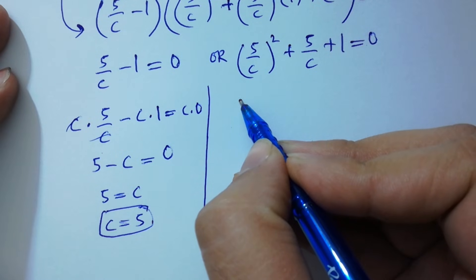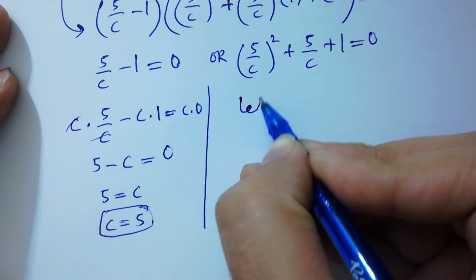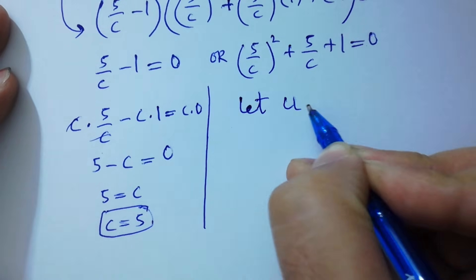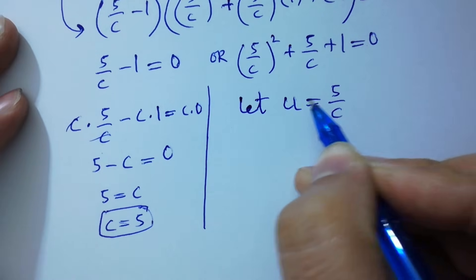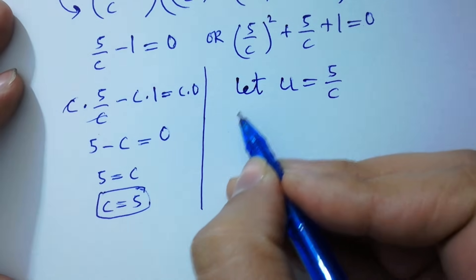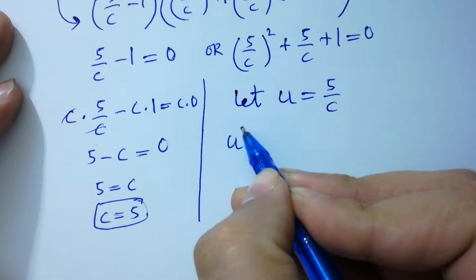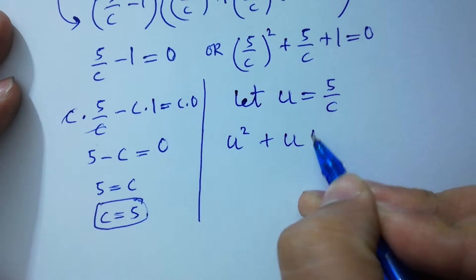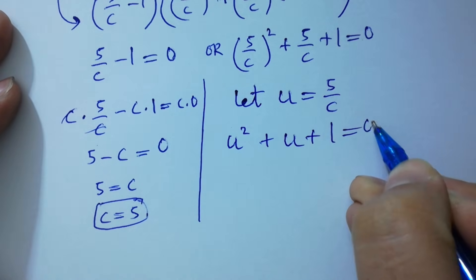And here you can see this is like a quadratic equation. So for this, let u equal to 5 over c. We have u squared plus u plus 1 equals 0.